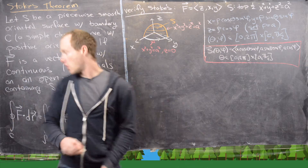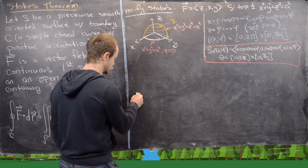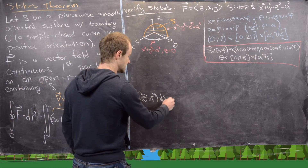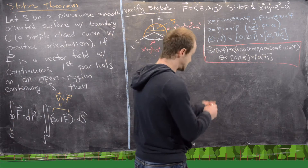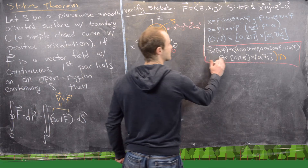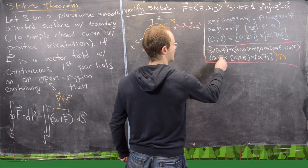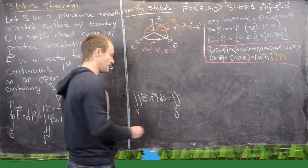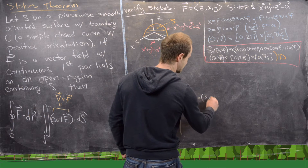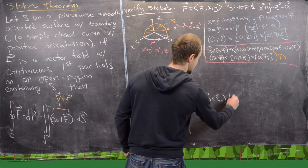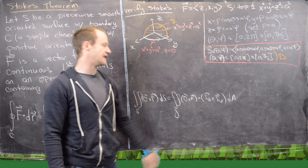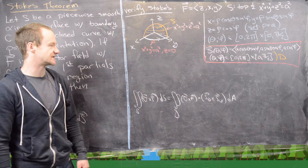Now let's recall what we need to calculate the surface integral. The surface integral over S of curl F · dS equals the double integral over D of (∇ × F) · (S_θ × S_φ) dA, where D is our region in the (θ, φ) plane. So we need to calculate ∇ × F and S_θ × S_φ.